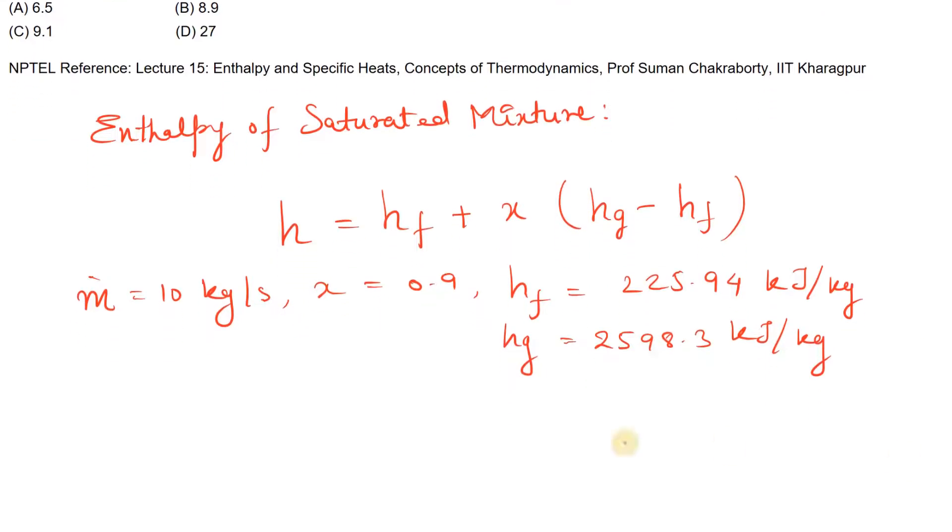All the values are given, so we can find the enthalpy of saturated mixture. H will be equal to 225.94 plus 0.9 multiplied by (2598.3 minus 225.94).